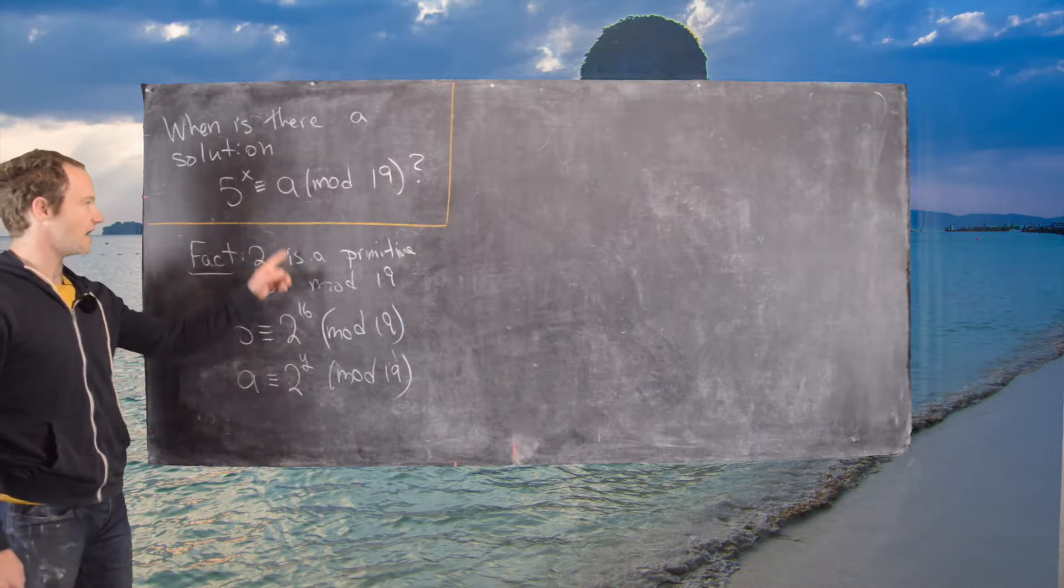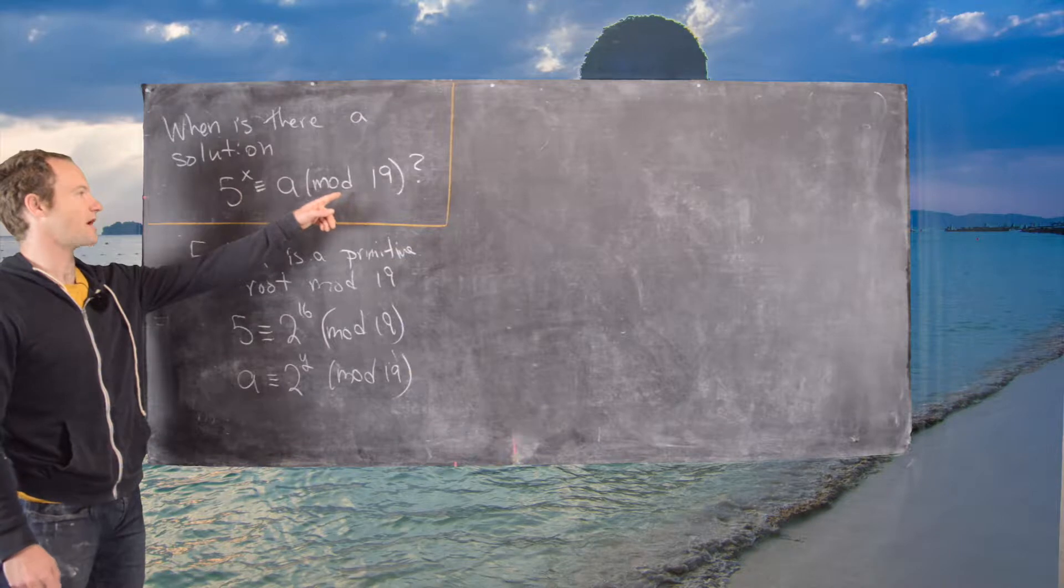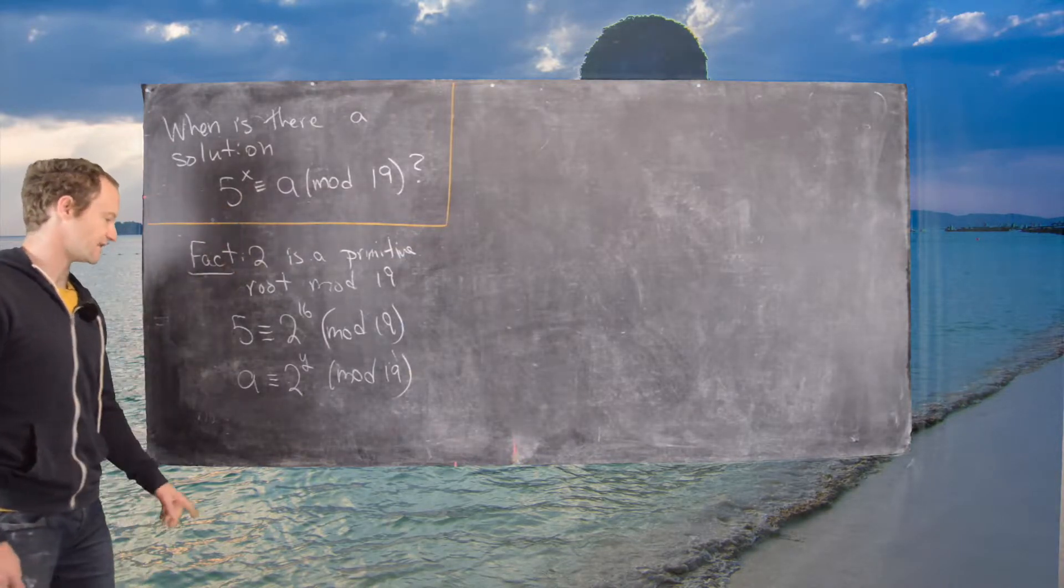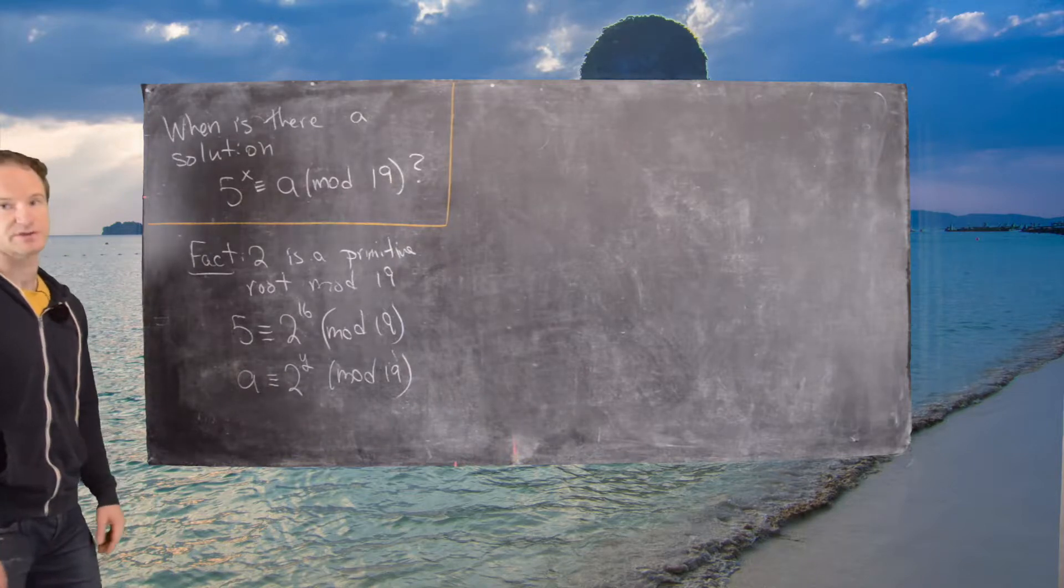Given the fact that we know that this number a will be relatively prime to 19 because it's a power of 5, and 5 is relatively prime to 19, so that means it can be expressed with this primitive root.